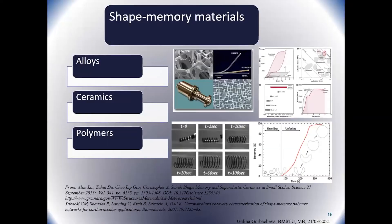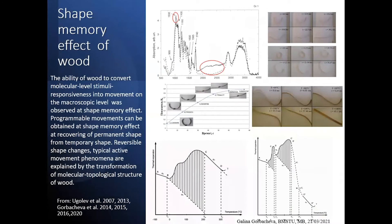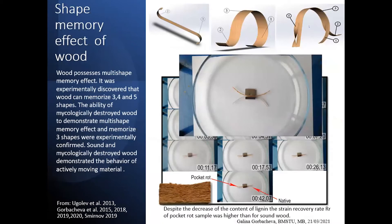Metal alloys, ceramics, and polymers also possess the shape-memory effect. The shape-memory effect of wood is based on quasi-residual frozen strains, experimentally discovered by Boris Obolev in the early 1960s. The ability of wood to convert molecular-level stimuli into movement on the microscopic level — recovery of the permanent shape from a temporary one — is explained by transformation of the molecular topological structure of wood. Wood possesses a multi-shape memory effect; it has been experimentally discovered that wood can memorize three, four, and even five shapes.